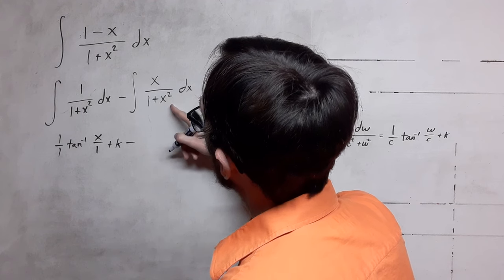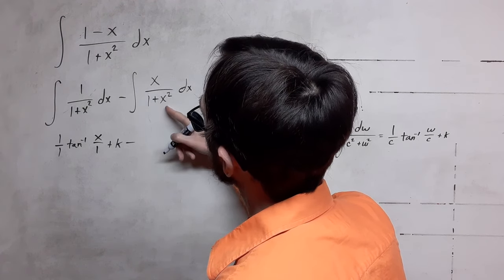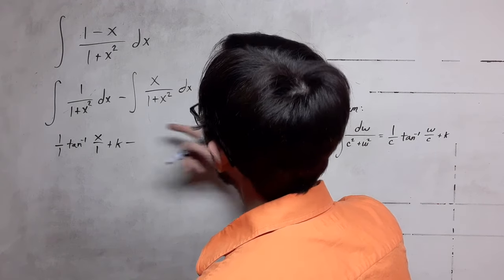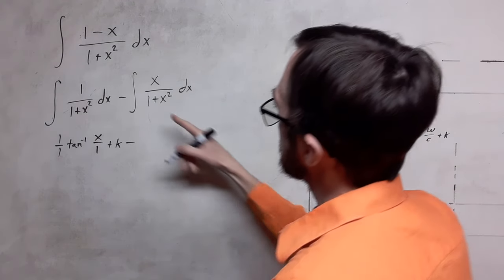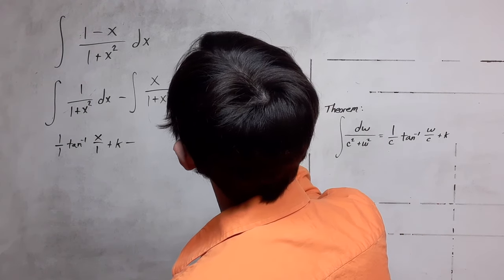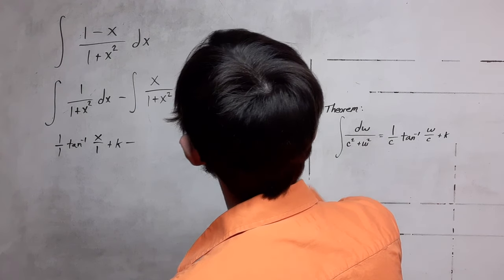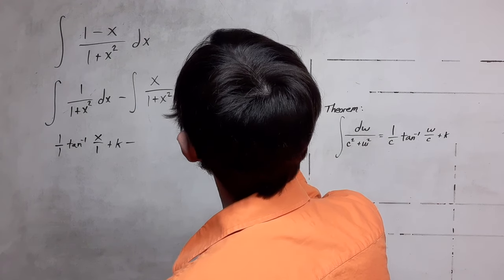Then we have to look at what can we do with this integral here? Well, we could do a u substitution here. Perhaps we let u equal 1 plus x squared. If we take the derivative of that,